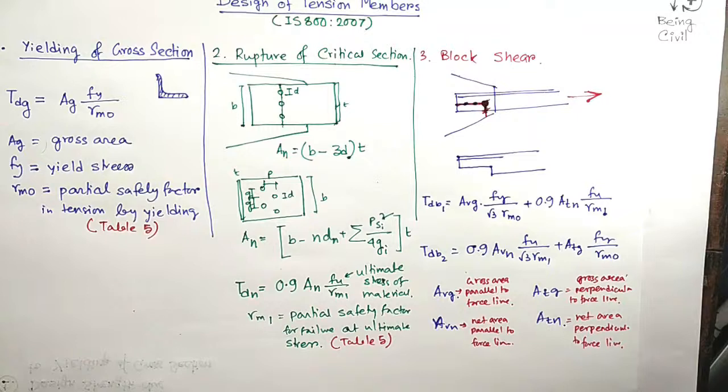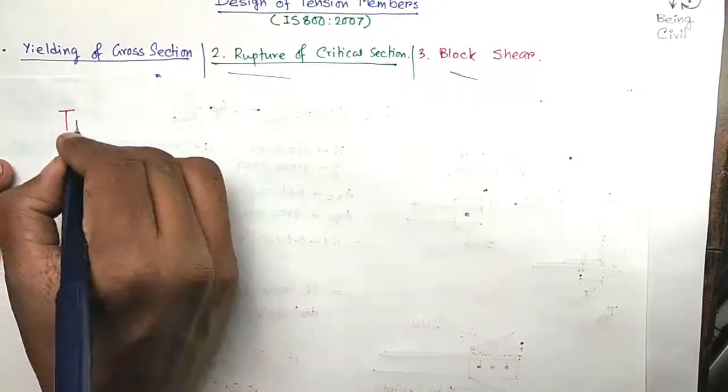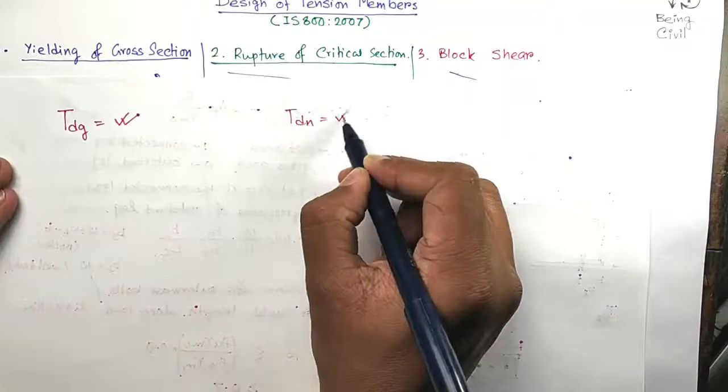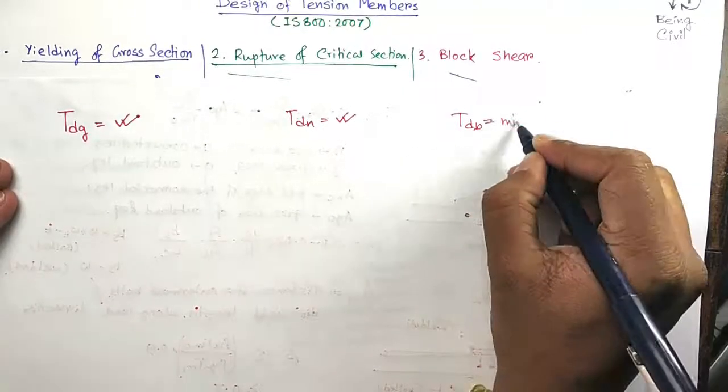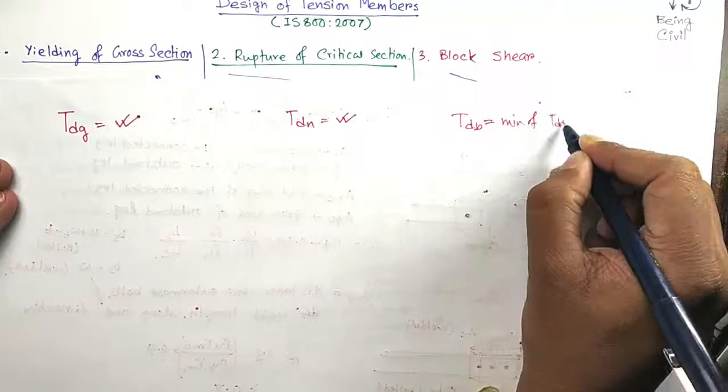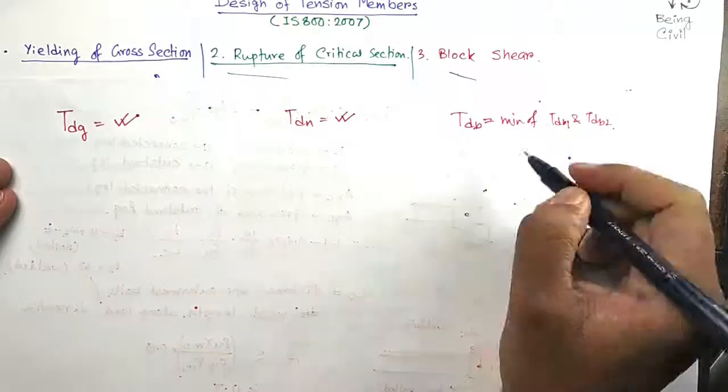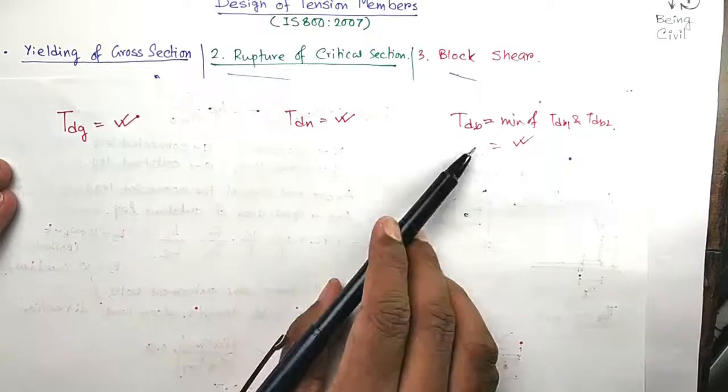So you have got all the strength of the member. Yielding of gross section is TdG, we have calculated. Rupture is TdN, I have calculated. And block shear is TdB, which is minimum of TdB1 and TdB2. So you have got all these: TdG, TdN, and TdB.